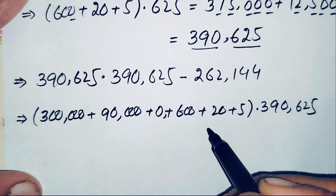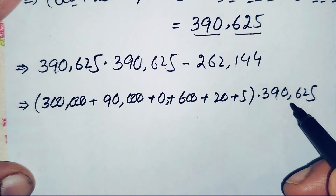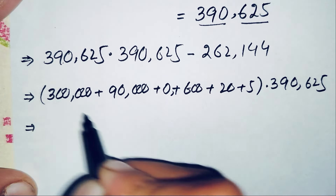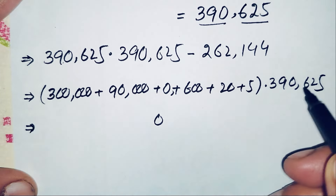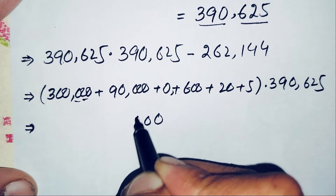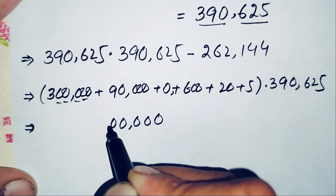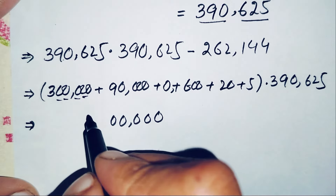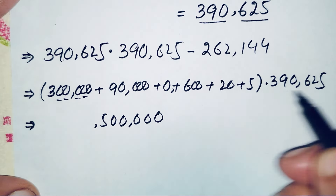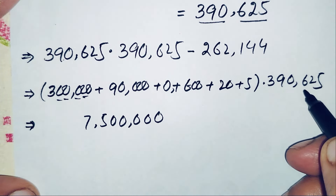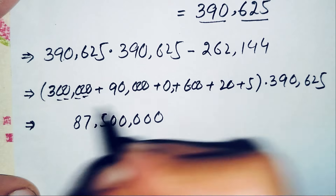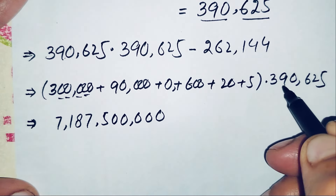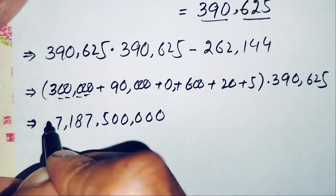Multiplying 390,625 by 300,000: working digit by digit, 3×5=15 (write 5, carry 1), 3×2=6 plus 1 is 7, 3×6=18 (write 8, carry 1), 3×0=0 plus 1 is 1, 3×9=27 (write 7, carry 2), 3×3=9 plus 2 is 11. This gives 117,187,500,000.